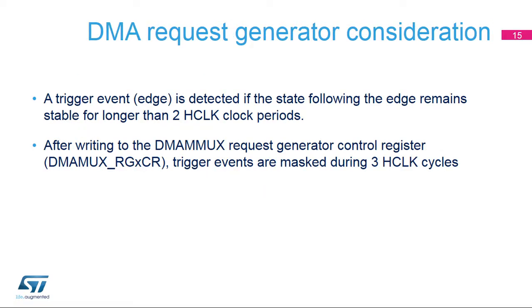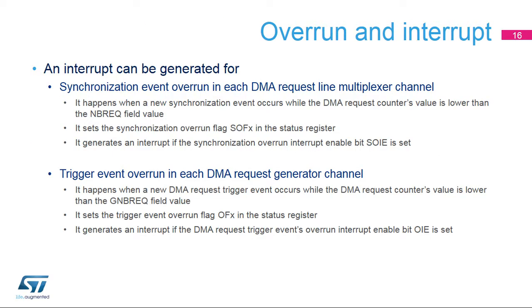A trigger event or edge is detected if the state following the edge remains stable for longer than two AHB clock periods. After writing to the DMA MUX RGXCR control register, trigger events are masked during three HCLK cycles. If a new DMA request trigger event occurs while the DMA request counter's value is lower than the GNBREQ field value, the trigger event overrun flag OFX is set in the status register DMA MUX RGSR of the corresponding generator channel. The overrun flag OFX is reset by setting the associated clear bit COFX in the DMA MUX RGCFR register of the corresponding DMA request line multiplexer channel. Setting the trigger overrun flag generates an interrupt if the OIE bit is set in the control register of the corresponding generator channel.